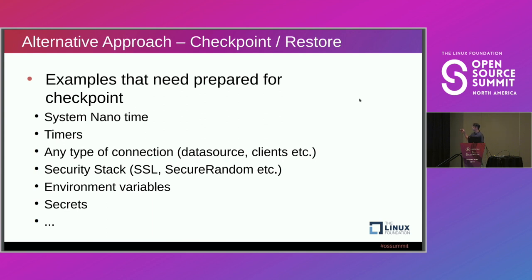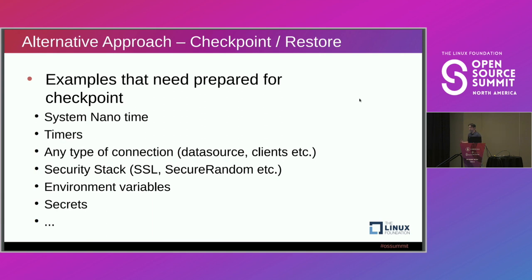Another concern is connections — you really don't want to connect to any data sources before checkpoint, because the goal is to restore into many parallel instances from that same checkpoint image. You can't restore the same connection into ten parallel instances, and such connections often require authorization, authentication, or endpoint configuration that won't be known at build time. Similarly, environment variables and secrets aren't known until you're deploying to Kubernetes, so those configurations need to take effect at restore time.